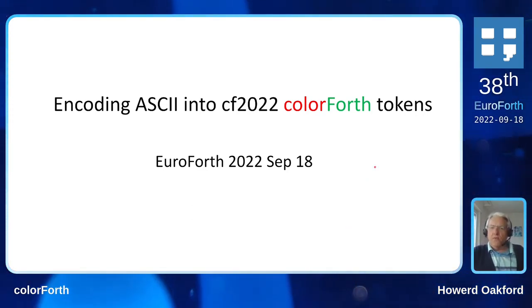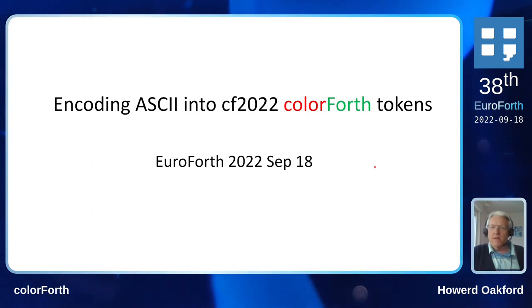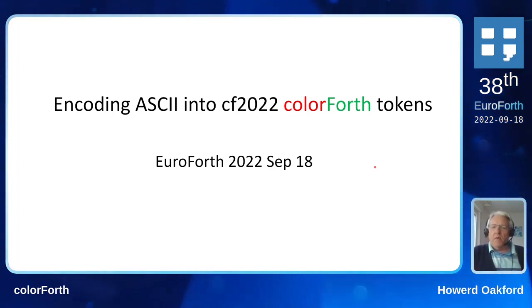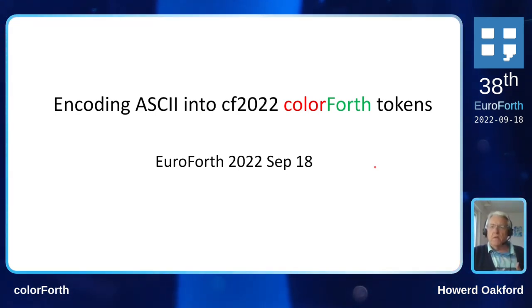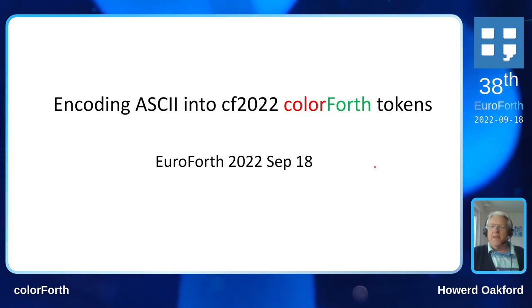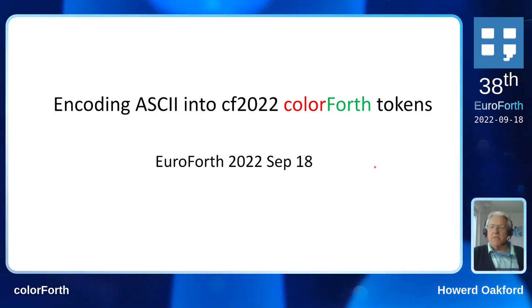As you probably know if you've followed any of my talks before, ColorForth doesn't use ASCII. It's one of its most endearing features and it's an utter pain because it means you can't interface with anybody else very easily. The reason it doesn't use ASCII is because it uses a pre-parsed 32-bit token value, of which four bits are the color and the other 28 bits are a Huffman-encoded compression of its name.